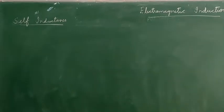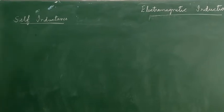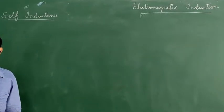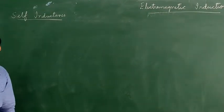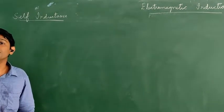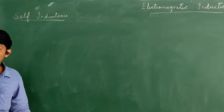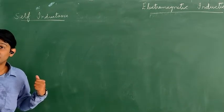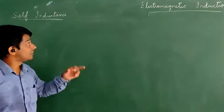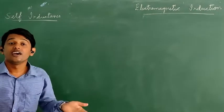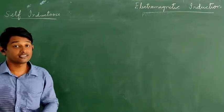The next topic is self inductance. Self inductance is the phenomenon in which EMF is being induced in one coil due to change in magnetic flux in the same coil. Unlike mutual inductance (which involves neighboring coils), self inductance — 'self' means itself — means the EMF is induced in the same coil due to the change in magnetic flux in that coil itself.